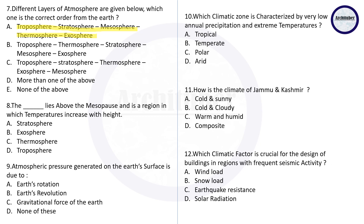Question eight: which layer lies above the mesopause and is the region in which temperature increases with height? The correct answer is the thermosphere. Question nine: atmospheric pressure generated on the Earth's surface is due to — the correct answer is C — the gravitational force of Earth. Question ten: which climatic zone is characterized by very low annual precipitation and extreme temperature? The answer is arid.